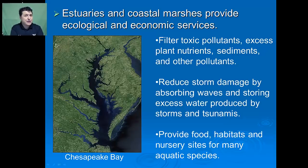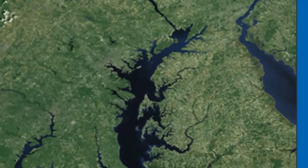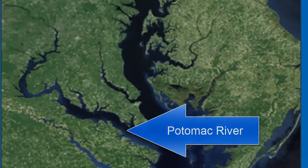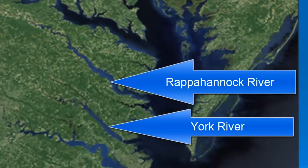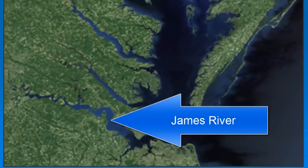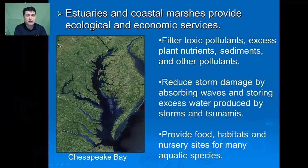In the United States, the Chesapeake Bay is the largest estuary. It spans 64,000 square miles, covering parts of six states: Delaware, Maryland, New York, Pennsylvania, Virginia, and West Virginia, and the District of Columbia. There are over 17 million people that actually live in this area.